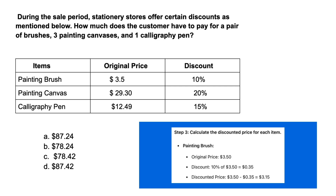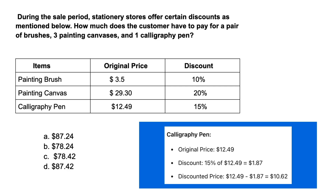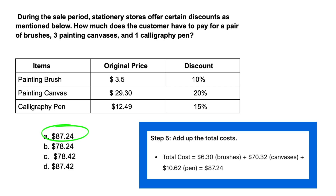Step three is to calculate the discounted price for each item. The painting brush: original price $3.50, discount of 10% is $0.35, so discounted price is $3.15. The painting canvas discounted price is $23.44. The calligraphy pen discounted price is $10.62. Finally, we add up these costs: $6.30 plus $70.32 plus $10.62 gives us a total of $87.24.